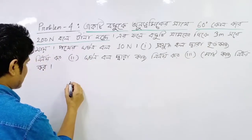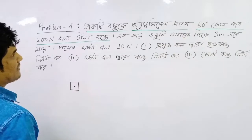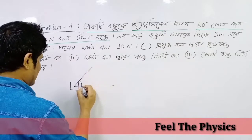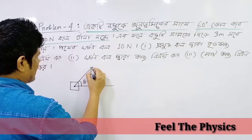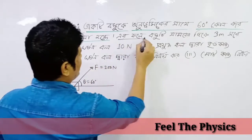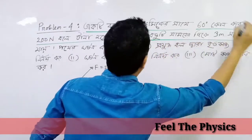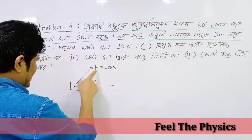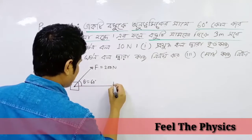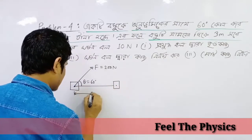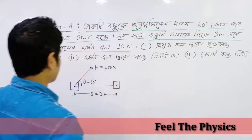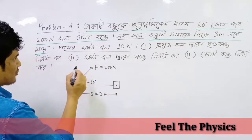This is the third question setup. The quantity at each step gives us 60 degrees, or minus 60 degrees, which means we find the quantity is 200 N. s equals 3 meters.